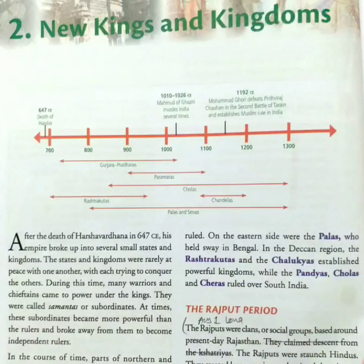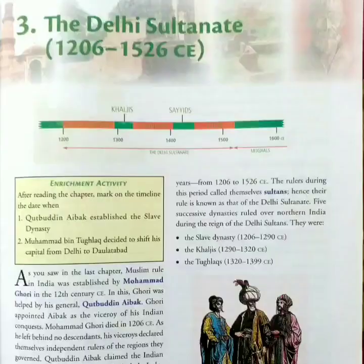In the 2nd chapter, we studied about the dynasties that ruled the medieval period. They were the Rajputs, then there were the Palas of Bengal. We also talked of Turkish invasion and the kingdoms of Deccan and South India.